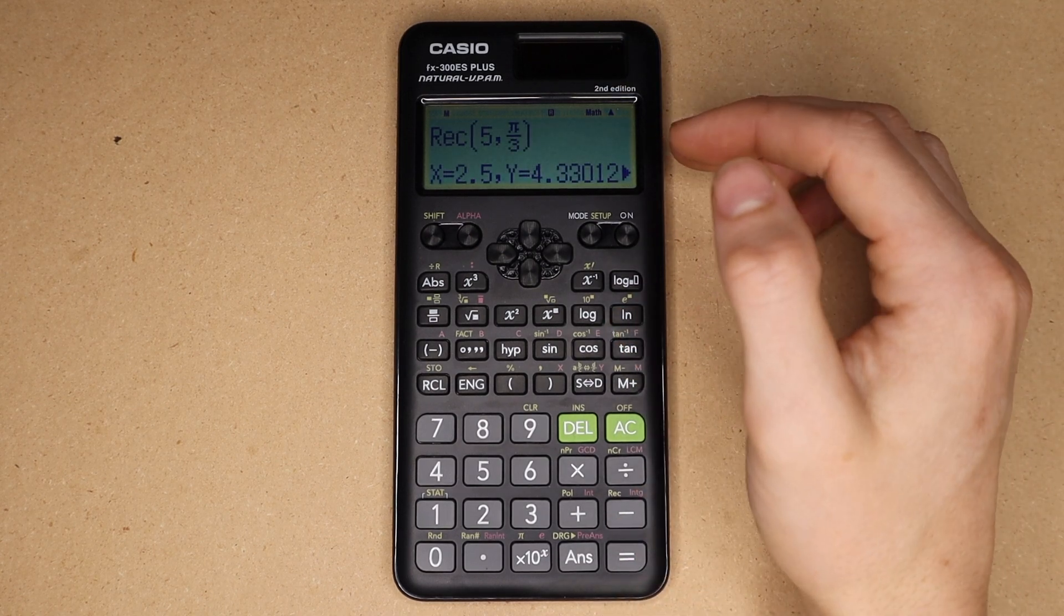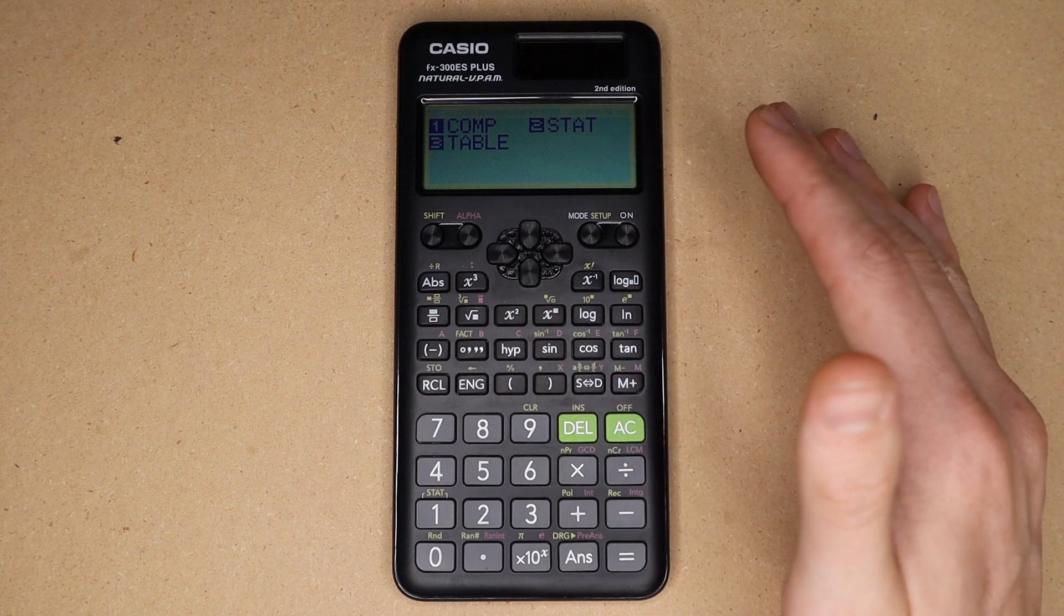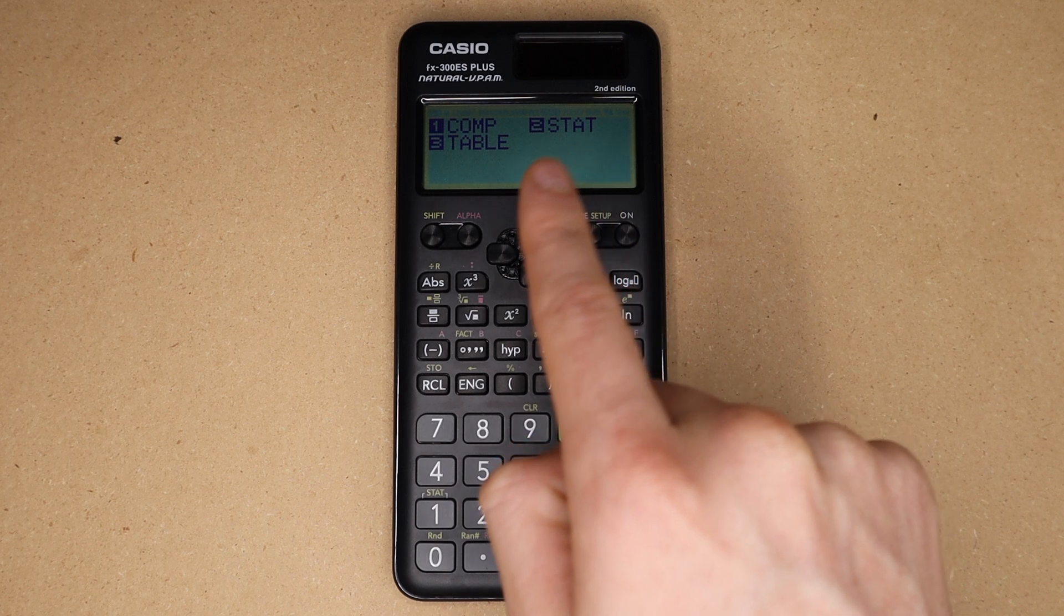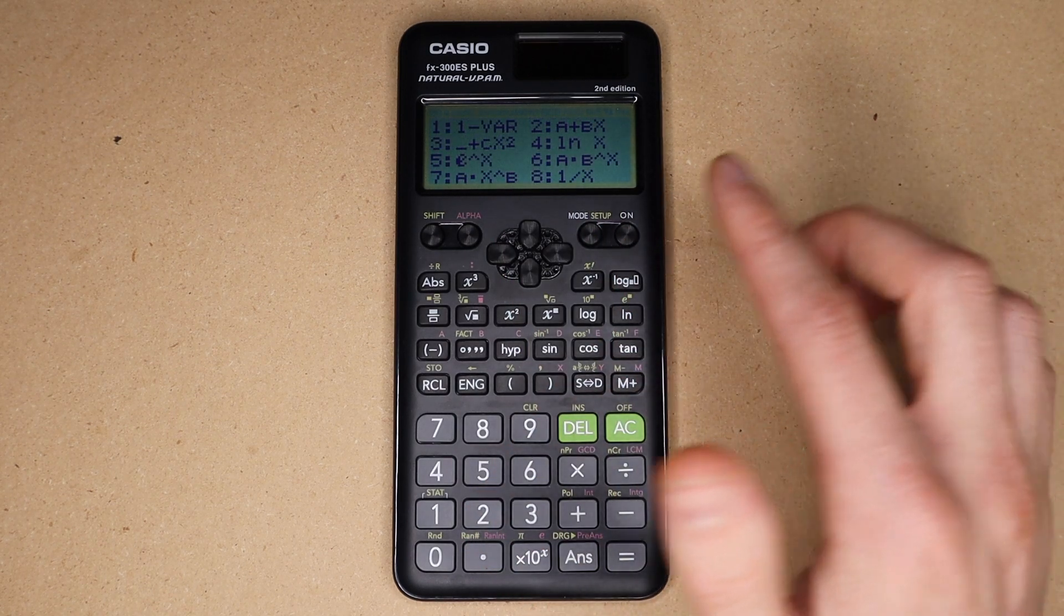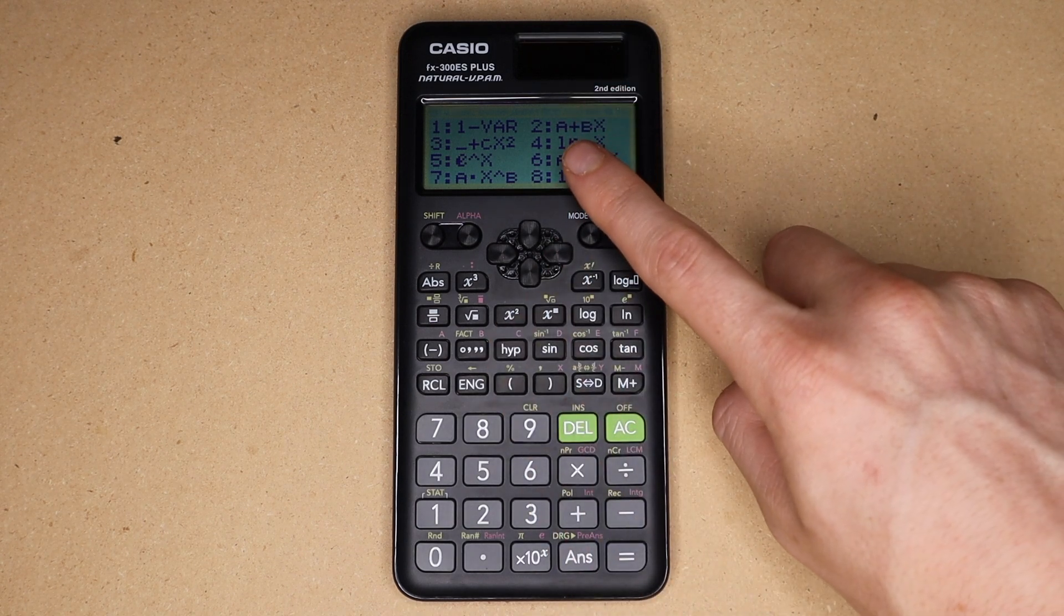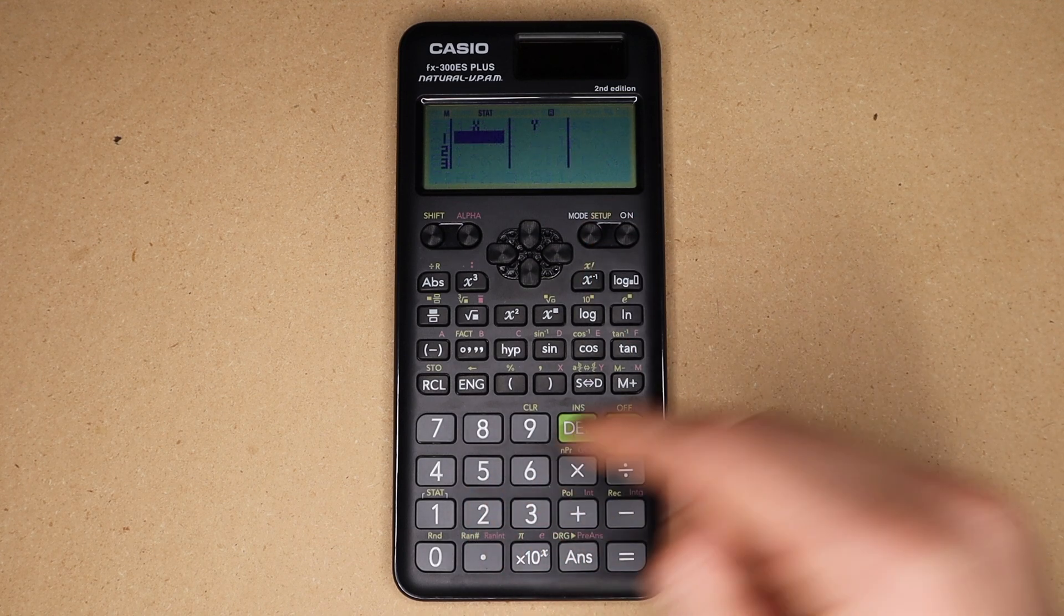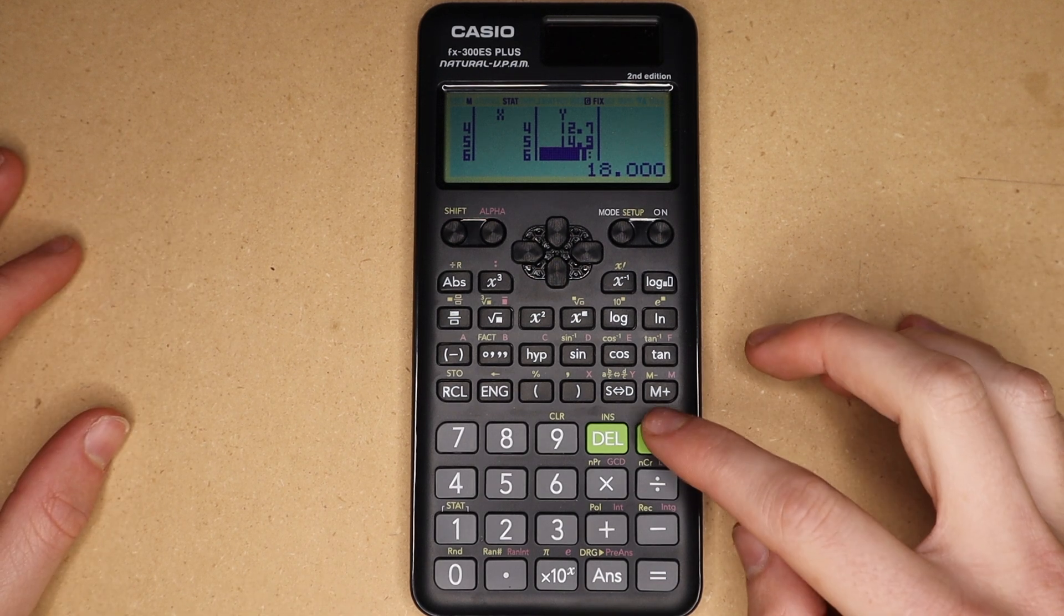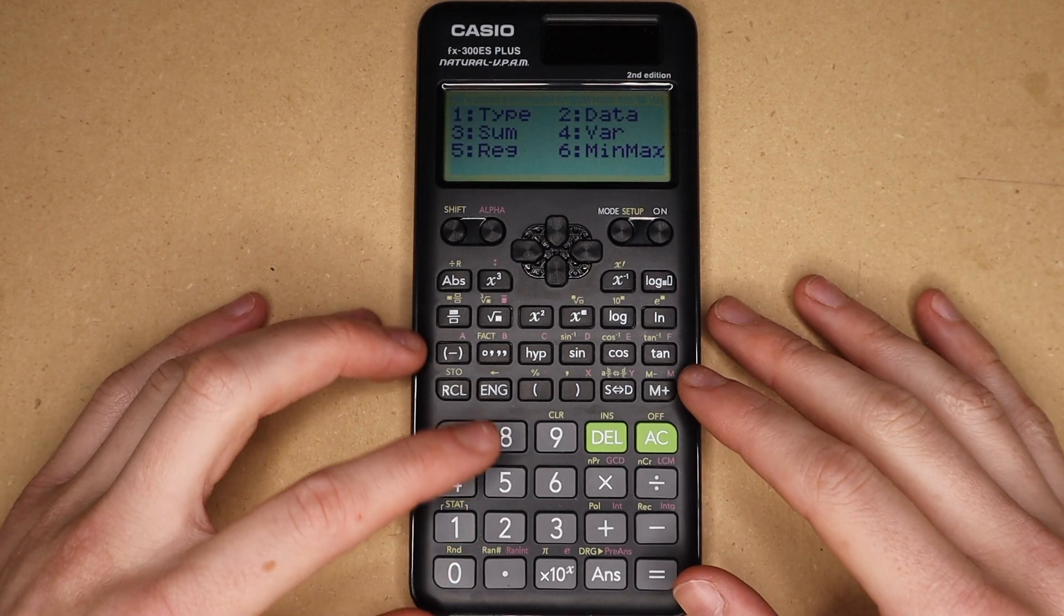So if you go up here and press this mode button it will bring up the three modes that this calculator has. The first one is the regular computation screen and then next there is stat and table. The stat function can do things like linear regression. So for example if I want to try and match data to an equation in the form a plus bx I can press 2 and then enter data - for example here I have six data points.